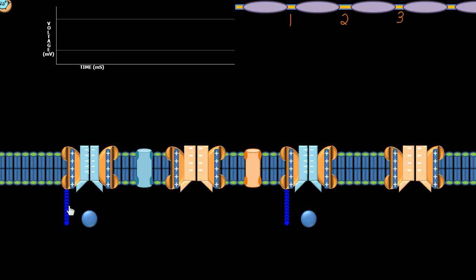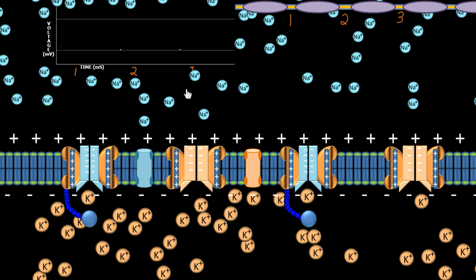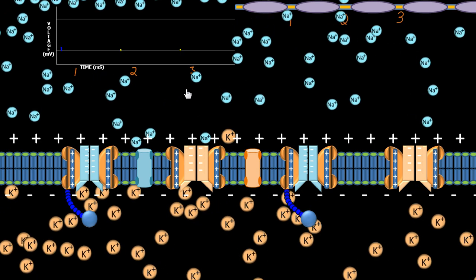What we see here is a zoomed-in version of node 1, and we're going to record the voltages of node 1, node 2, and node 3. If we get our system started by adding in our sodium and potassium, the first thing we notice is that sodium is on the outside of the cell due to the sodium-potassium pump, and potassium is on the inside of the cell, also due to the sodium-potassium pump.